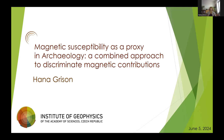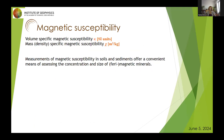First I should explain what magnetic susceptibility is. Magnetic susceptibility indicates how a material responds to an applied magnetic field. It's a dimensionless physical property typically represented by the Greek symbol kappa for volume-specific magnetic susceptibility. Because we need to compare materials with different densities, we use mass-specific or density-specific magnetic susceptibility, represented by the Greek symbol chi, with units of cubic meters per kilogram.